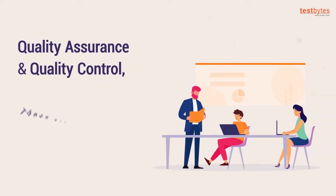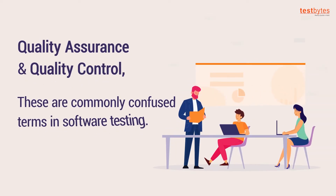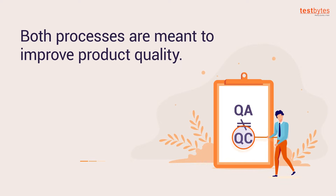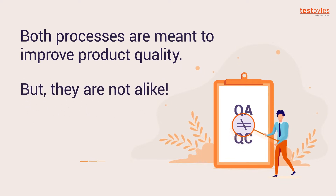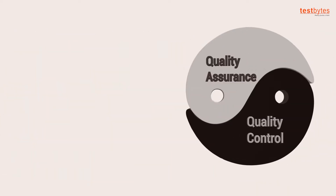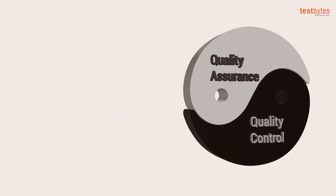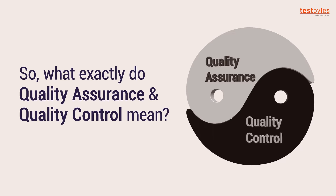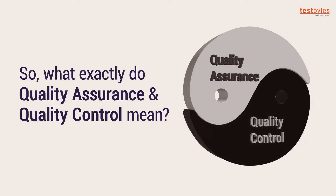Quality assurance and quality control are commonly confused terms in software testing. Both processes are meant to improve product quality, but they are not alike. So what exactly do quality assurance and quality control mean?